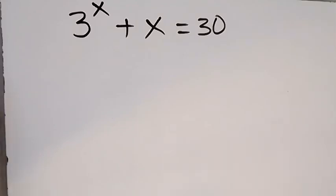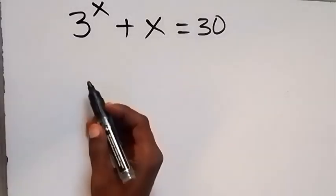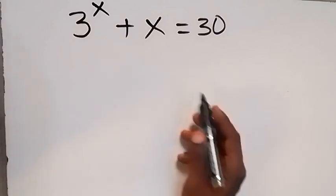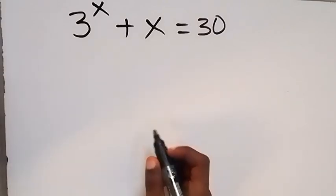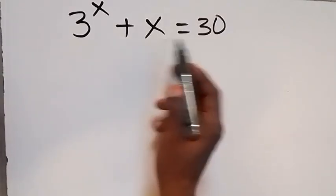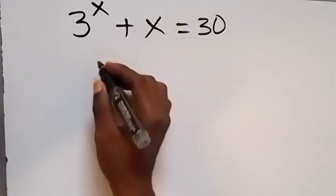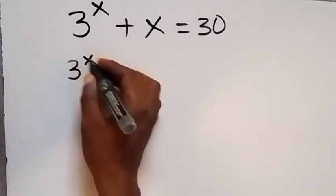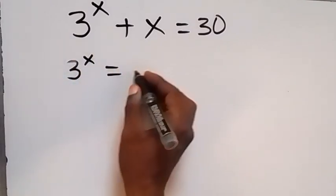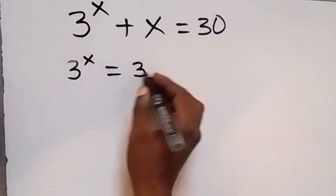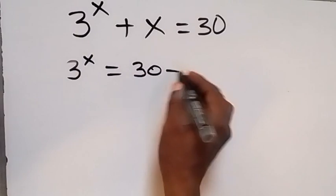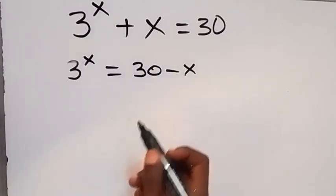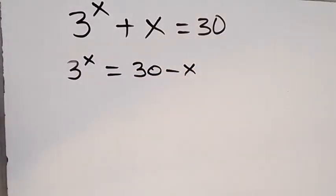Hello, how to solve this problem: 3 raised to power x plus x equals 30. Let's take x to this side, then we have 3 raised to power x equals 30 minus x.